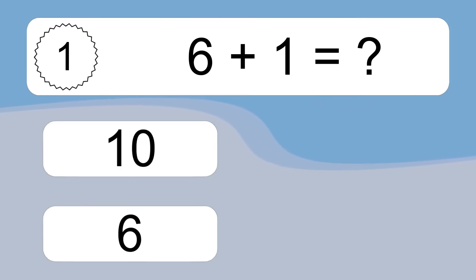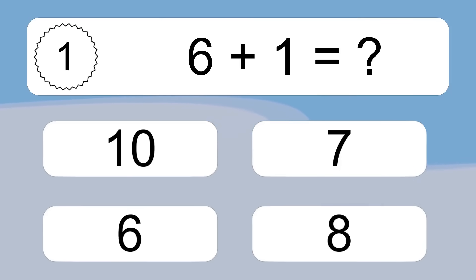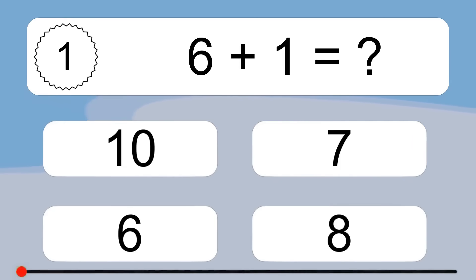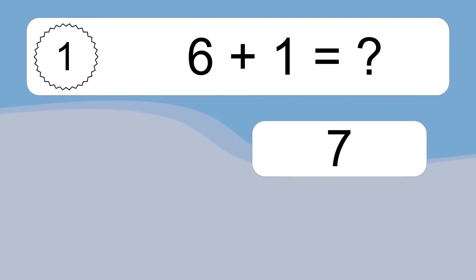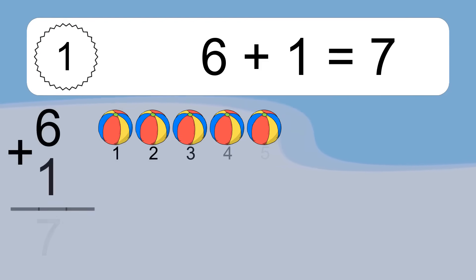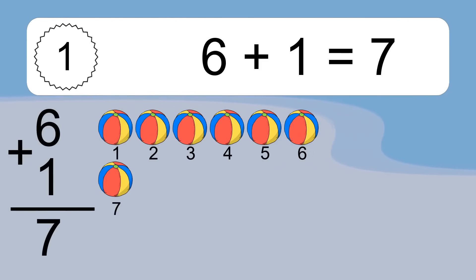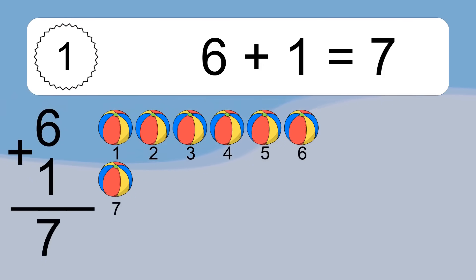6 plus 1 equals what? 6 plus 1 equals 7. Let's count it: 1, 2, 3, 4, 5, 6, 7.